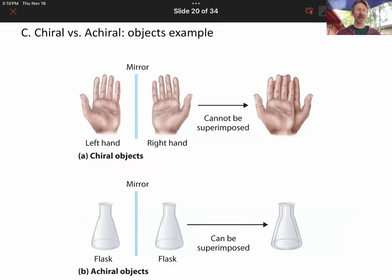So, chiral objects have non-superimposable mirror images, while achiral objects can be superimposed and do have mirror planes.